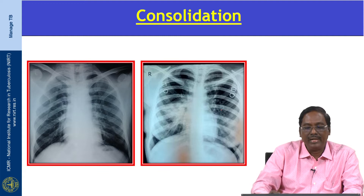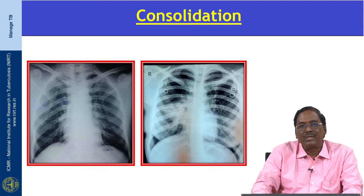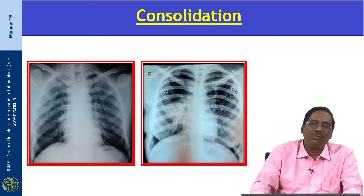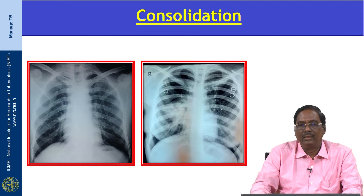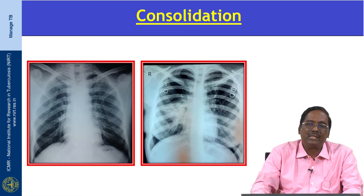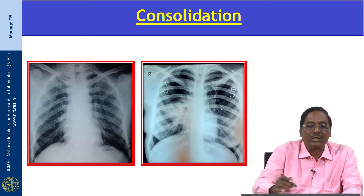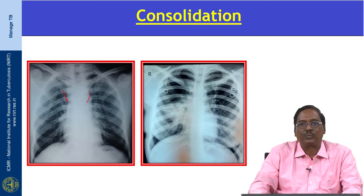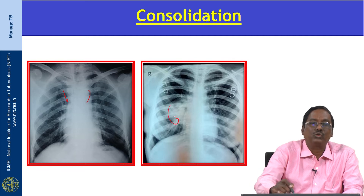In 5 percent of patients, the Ghon focus extends into other parts of the lung, usually in immunocompromised patients. Consolidation may involve a lobule, segment, or lobe. Primary consolidation usually involves the anterior segment of the upper lobe, middle lobe, or lower lobe, and may be associated with lymphadenopathy. That association is an important feature to differentiate consolidation in primary TB from post-primary. This image shows consolidation associated with lymph node enlargement.